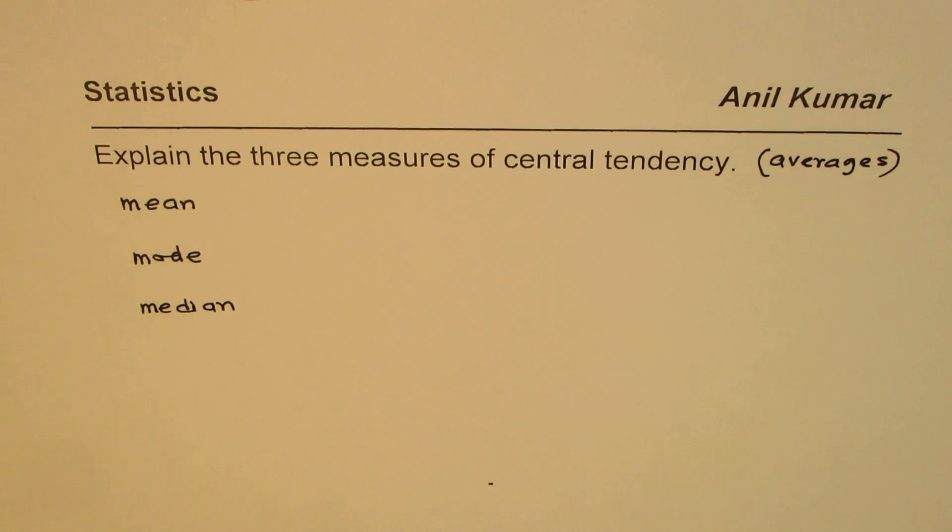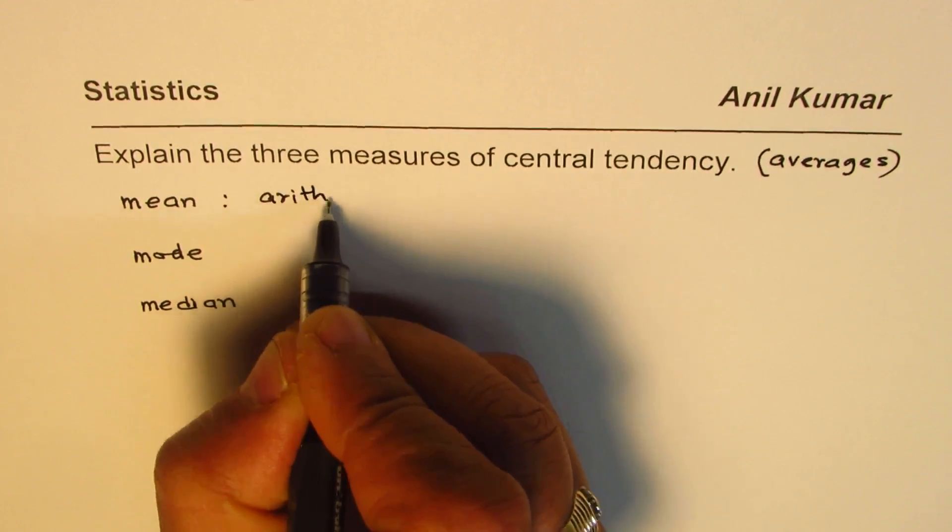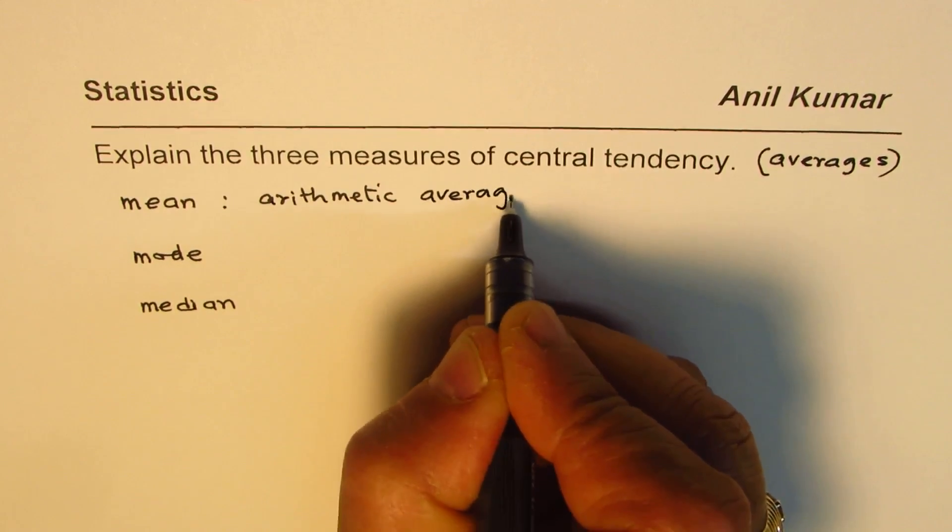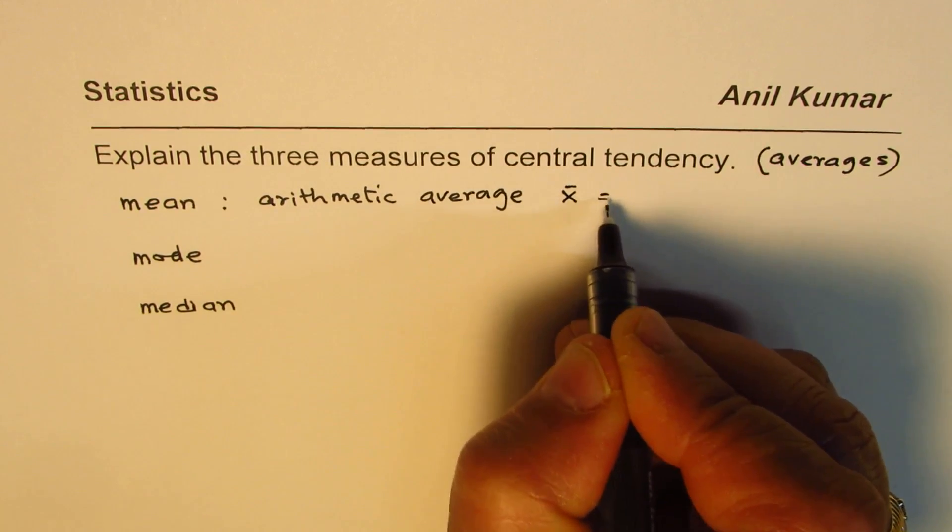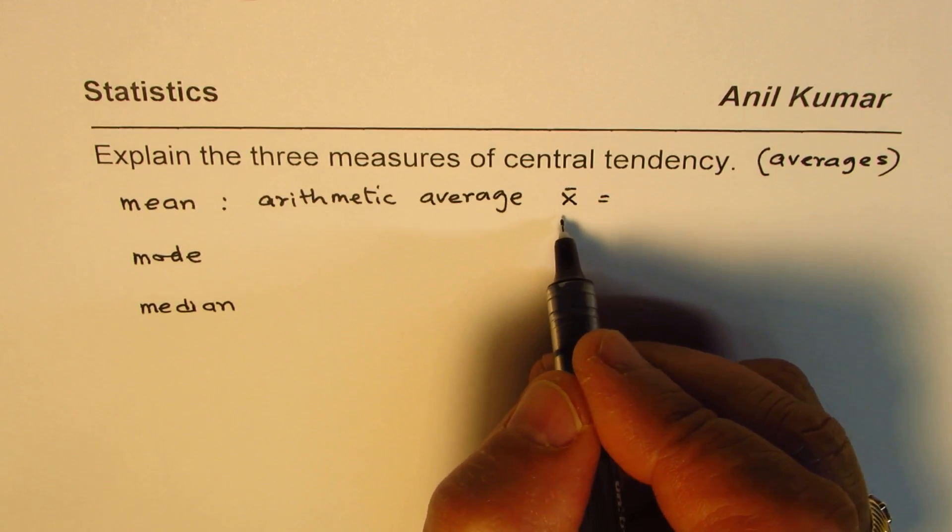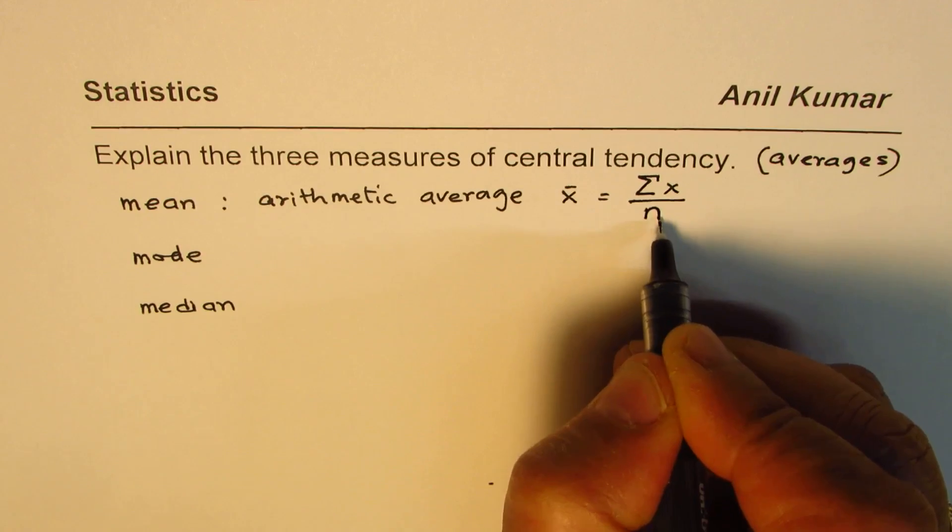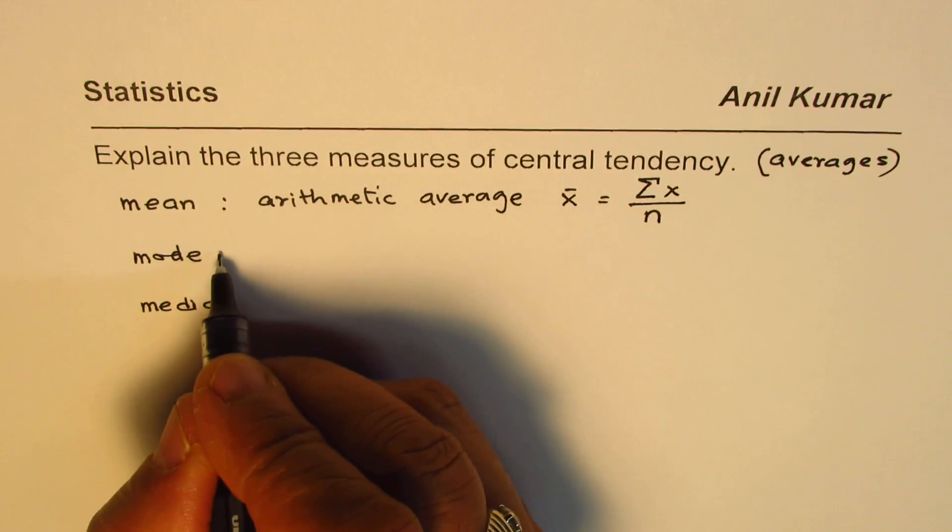When we talk about mean, what does that mean? Mean is also referred to as arithmetic average. Normally to calculate mean, we find the sum of all the elements. Let's say x is the element, then the mean, which is normally shown as x-bar, will be sum of all elements divided by the number of elements. That is how we calculate mean.